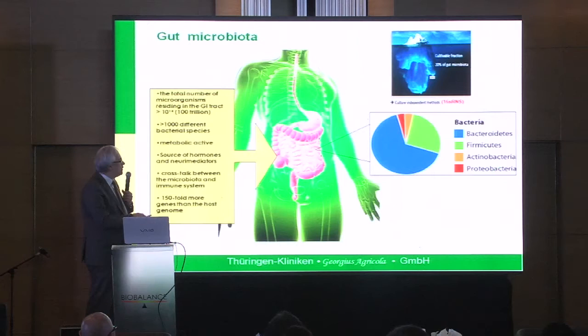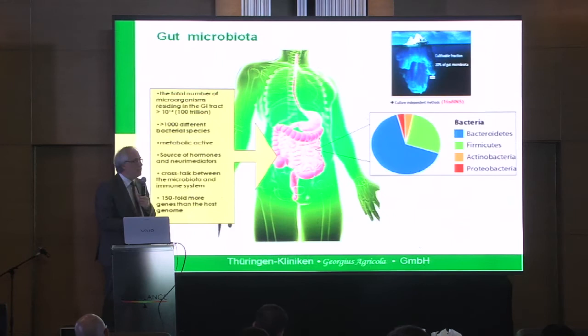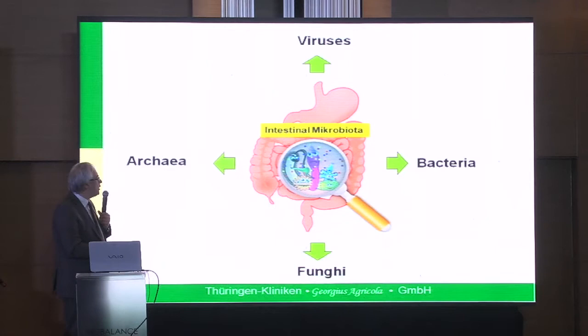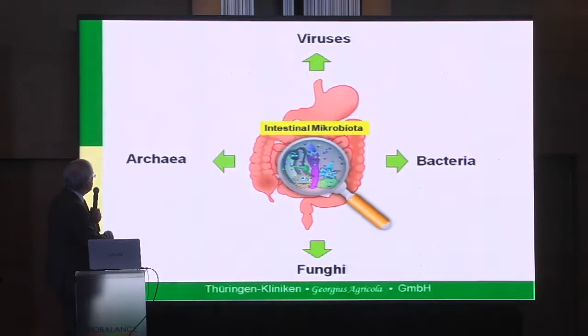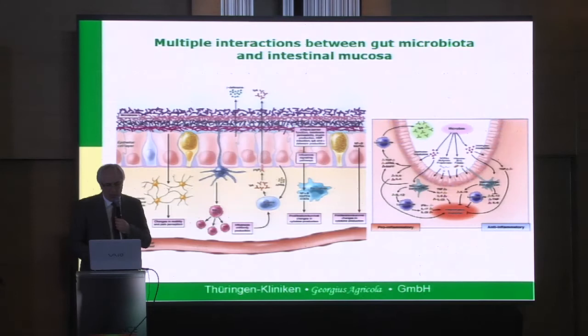We have different types of bacteria — four important groups: Bacteroides, Firmicutes, Actinobacteria, and Proteobacteria. If we try to cultivate the bacteria with traditional methods, maybe we get 5%, 10%, 15%. All the rest we can detect only with these new modern sequencing machines. I will talk mainly about bacteria, but we also have archaea, fungi, and viruses. We still do not really know how this whole world interacts.